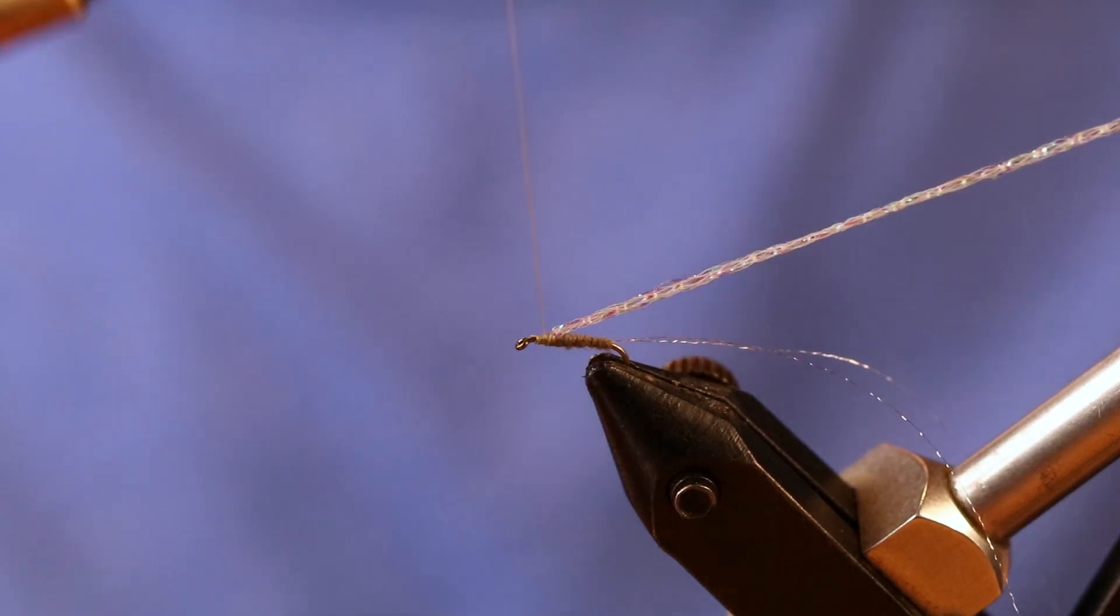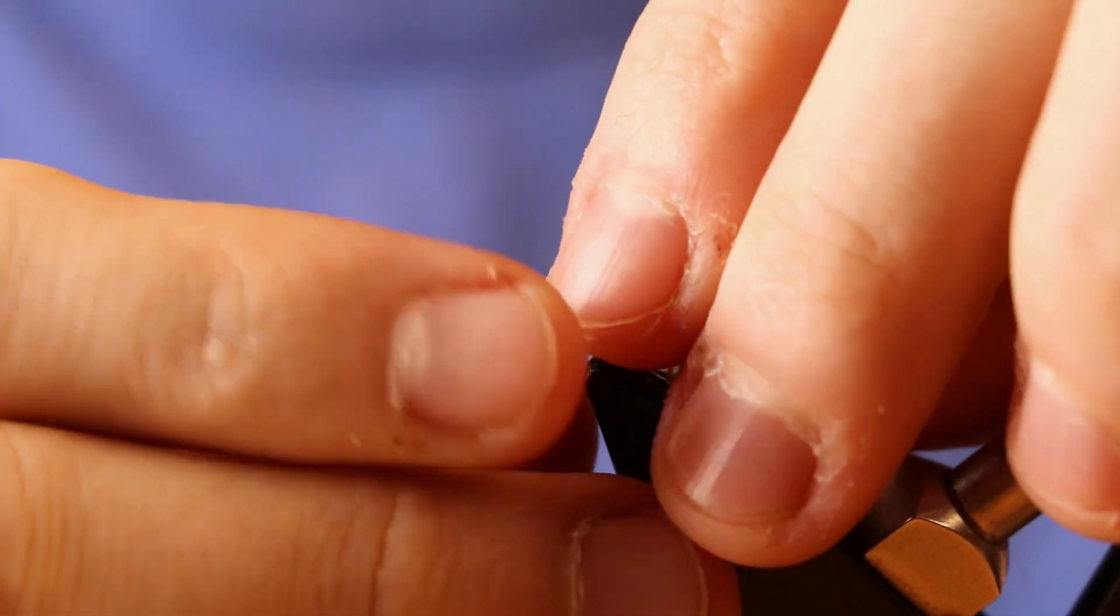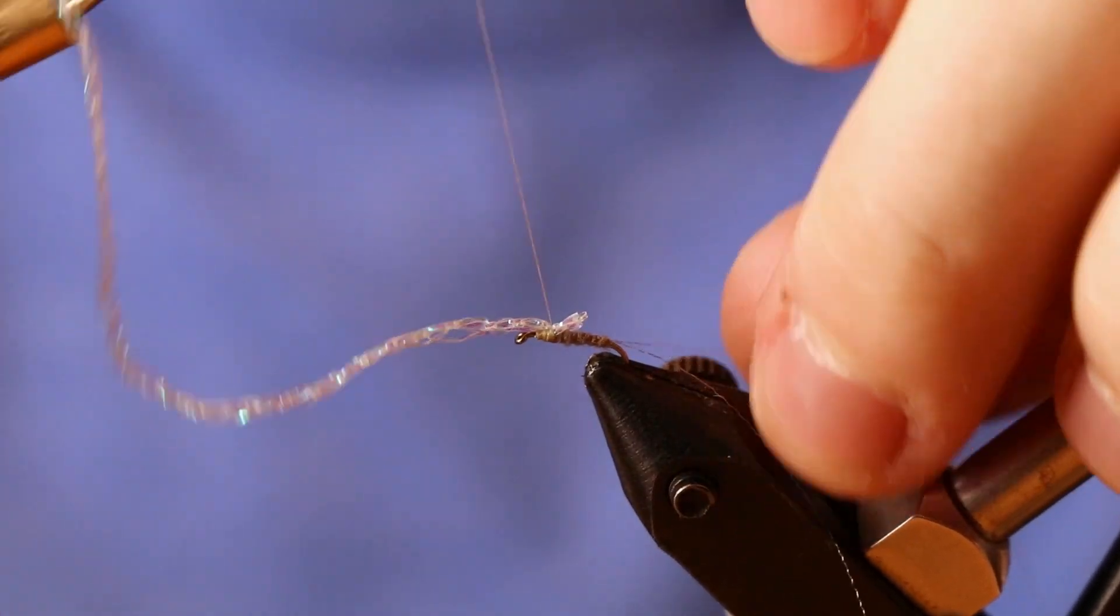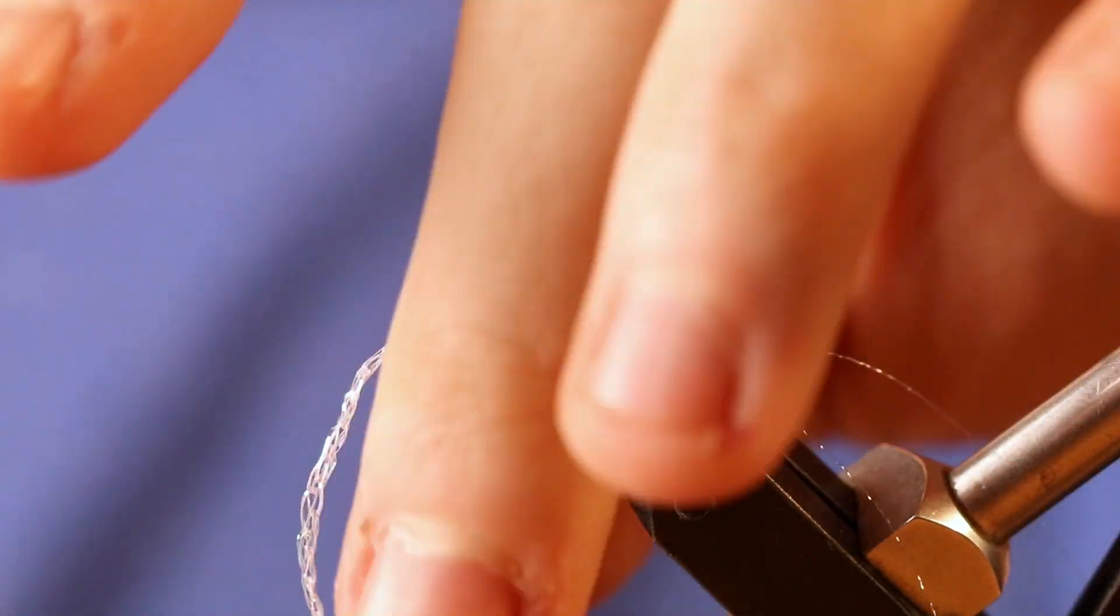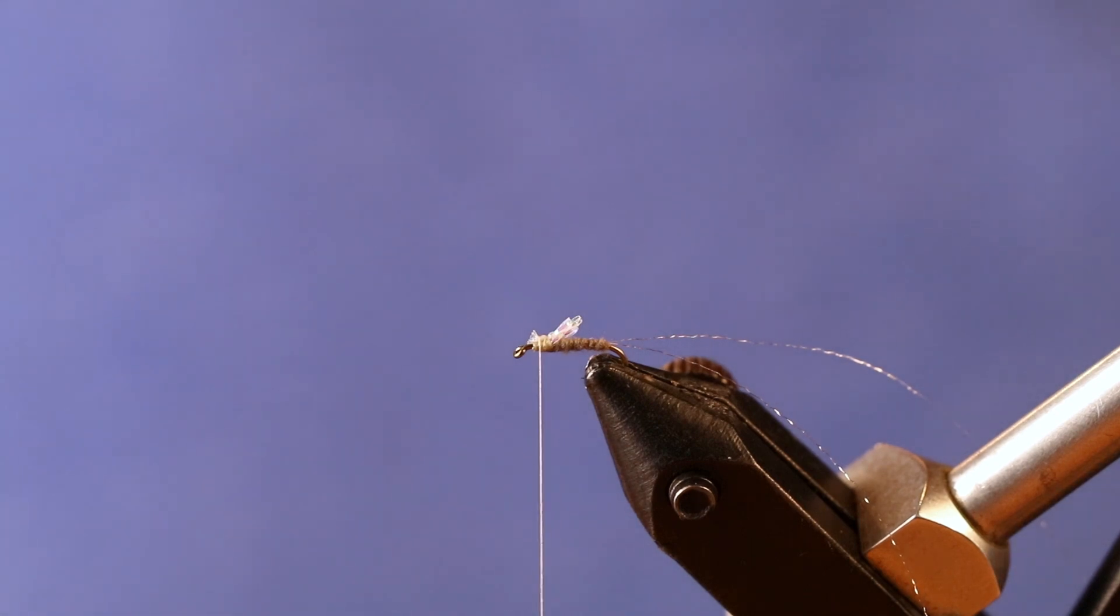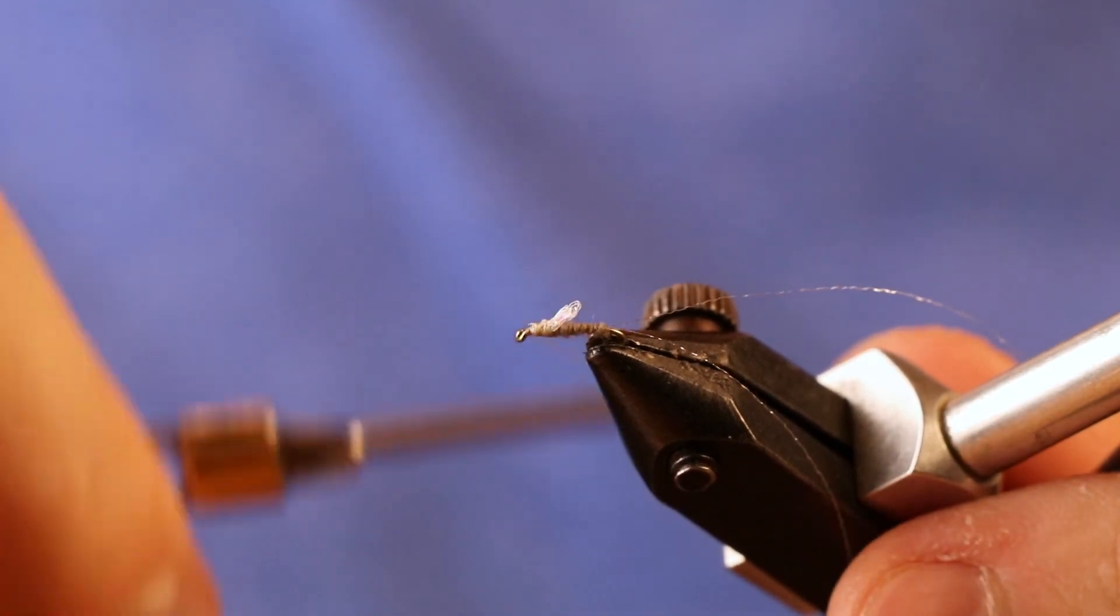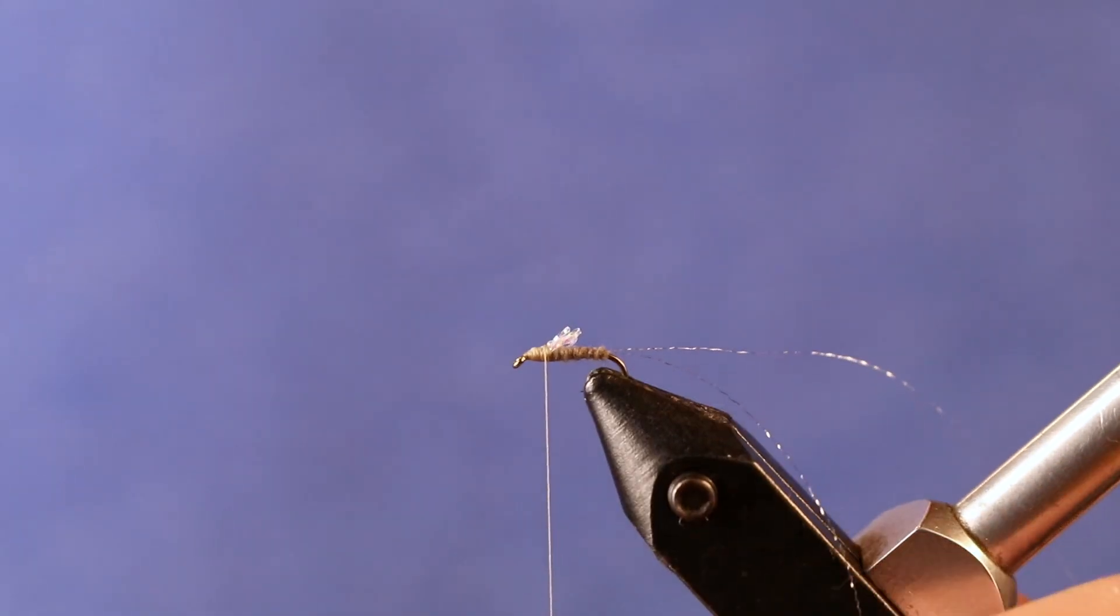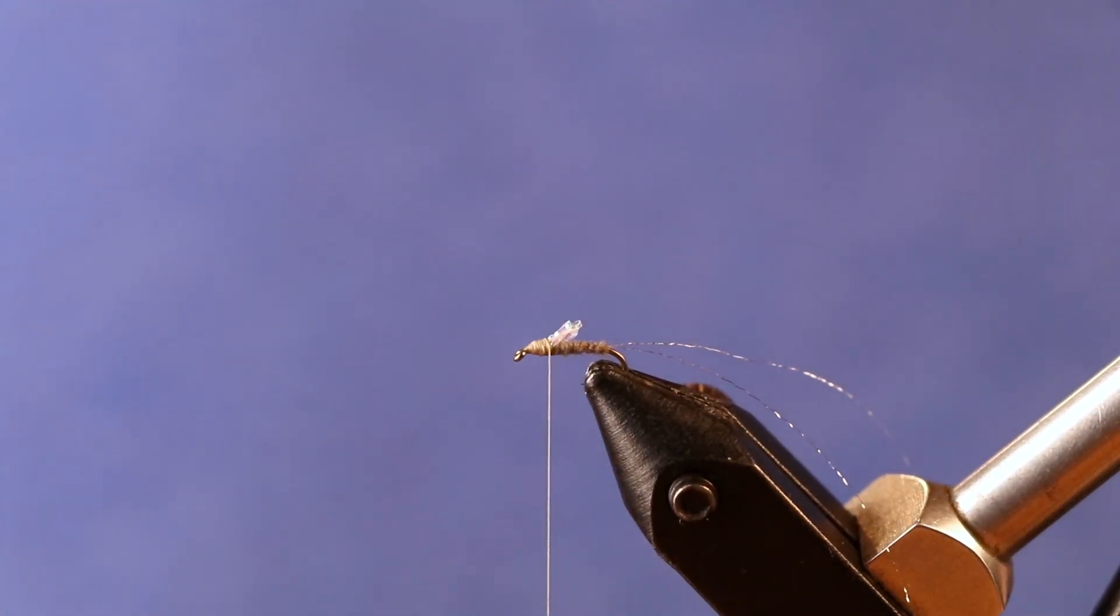So I tie that in on the top here, keeping it pretty far towards the front. I'm just going to fold it over on itself. You want to make sure you get a nice little tight wing bud out of this, a couple wraps just to make sure it's secured in place. Cut that off. I'm going to try to capture these butt ends so they're not sticking up through my dubbing on the front. Even that out just a little bit.